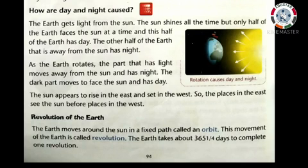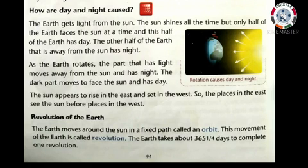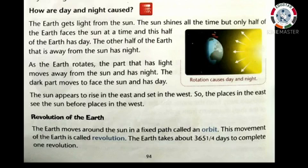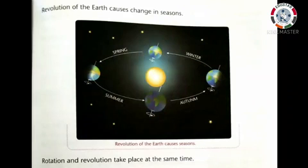See these pictures. The first picture shows rotation of the Earth on its axis. The second picture shows how rotation causes day and night. The next topic is revolution of the Earth. The Earth moves around the Sun in a fixed path called an orbit. This movement of the Earth is called revolution. The Earth takes about 365 and a quarter days to complete one revolution.